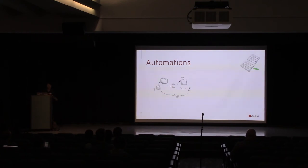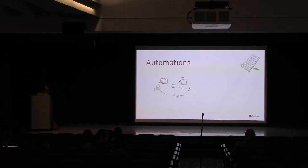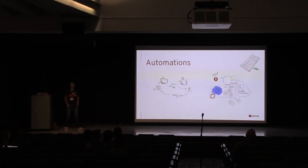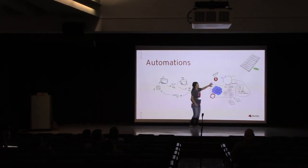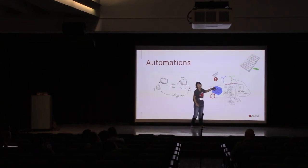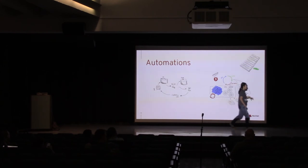Doing cloud-native or container-native systems, the first thing that comes to mind other than microservices is automation, because there's a lot more you need to do so you need to do a lot more automations too. To do that, now we have the operator pattern. The operator pattern helps you spin up operators that manage your application lifecycle. When you have an operator spin up, you define the services or image you want to stand up, and it takes a look at all the things you have configured in your OpenShift system.